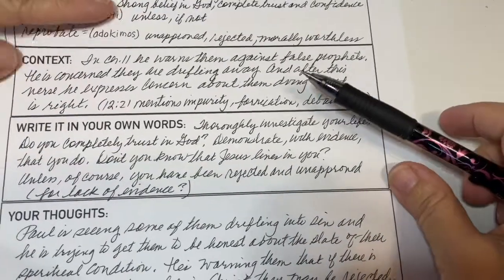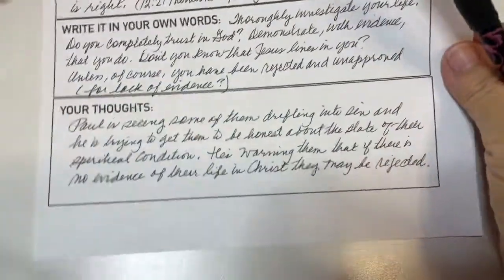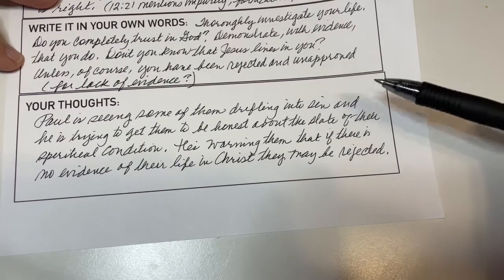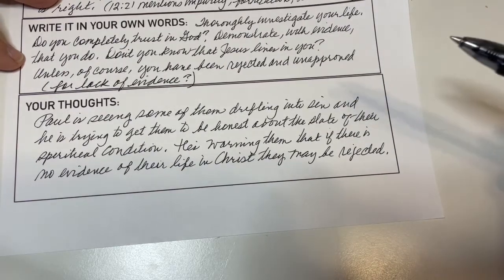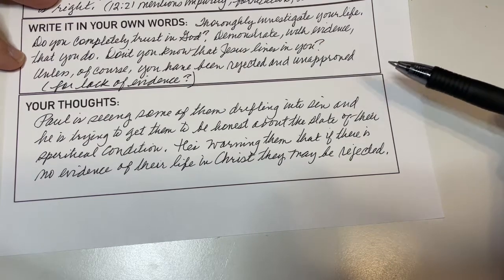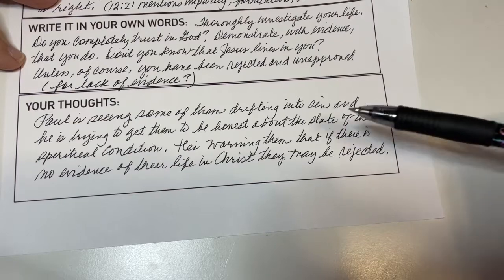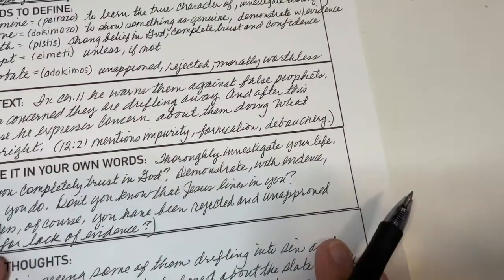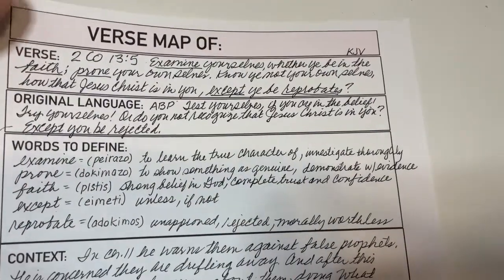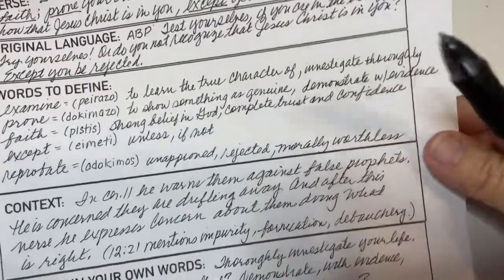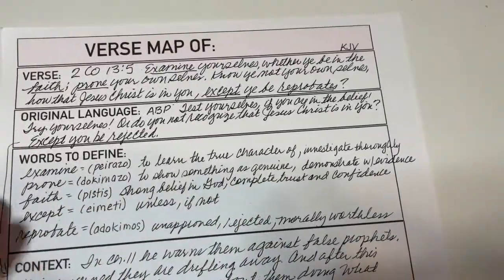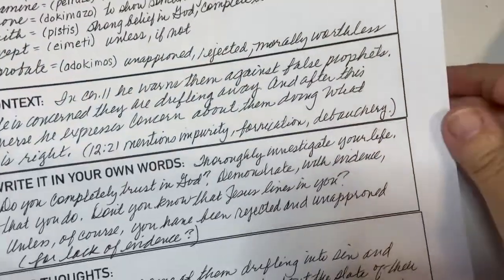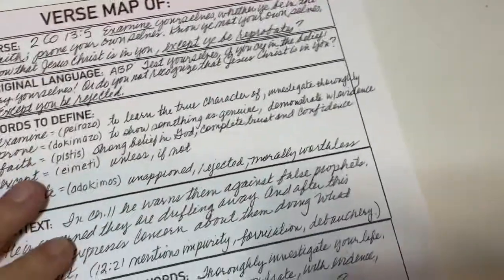There's a section where you can put your thoughts on what you think, and here is my entry: Paul is seeing some of them drifting into sin, and he's trying to get them to be honest about the state of their spiritual condition. He's warning them that if there is no evidence in their life of their life in Christ, they may be rejected. That is basically what you do to map out a verse — study it, break it down, and get a better understanding of it. There's no right or wrong — it's just to help you dig in a little bit.